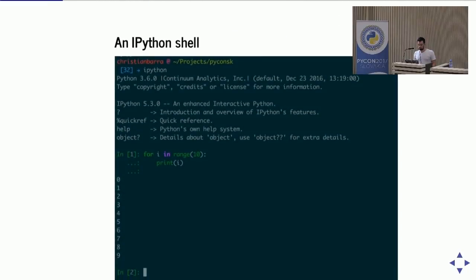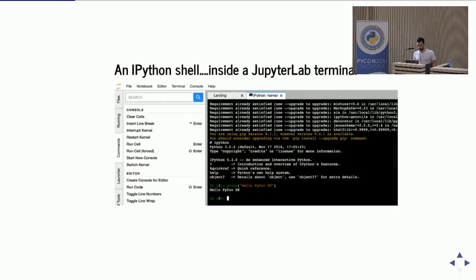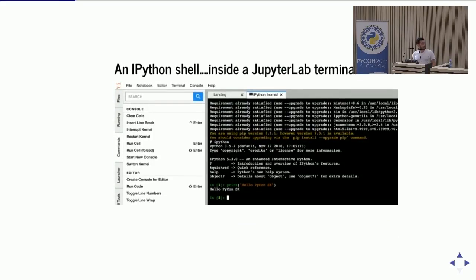So what was — and what is still — IPython? It's just a shell with a lot of color; it's like an enchanted version of the Python shell. This is a Python shell inside a JupyterLab terminal, so you can see the shell running inside what is just a web page.